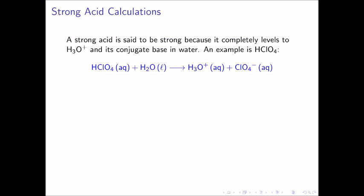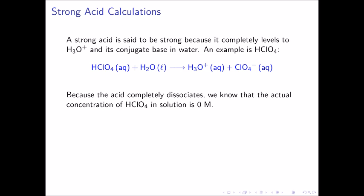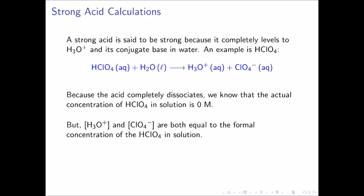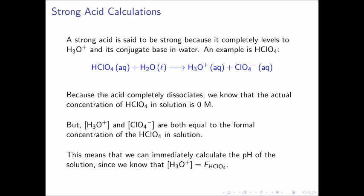Recall that a strong acid is said to be strong because it completely levels to hydronium ion and its conjugate base in water. Perchloric acid is an example of a strong acid. When perchloric acid reacts with water, it completely forms hydronium ion and perchlorate ion in solution. Because the acid completely dissociates, we know that the actual concentration of perchloric acid in solution is 0 molar. But we also know that the concentration of hydronium ion and perchlorate ion are both equal to the formal concentration of the perchloric acid in solution. This means that we can immediately calculate the pH of this solution.